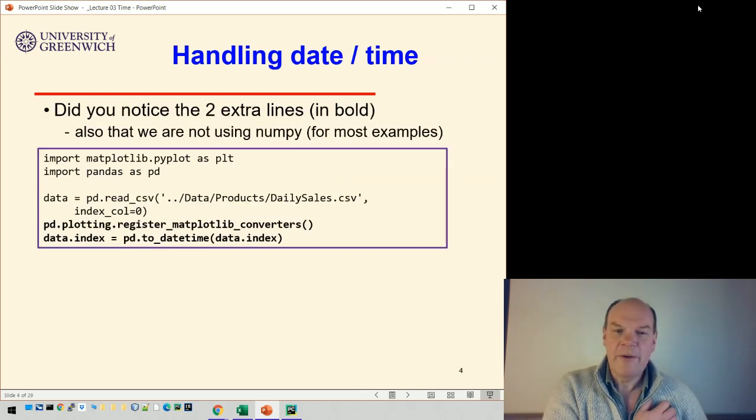But then you may or may not have noticed the two extra lines that are doing the conversion to time. This first line isn't strictly necessary. The pd.plotting.register_matplotlib_converters isn't strictly necessary. I just sometimes get error messages if I don't use that. Or warning messages rather. data.index though is very, very crucial.